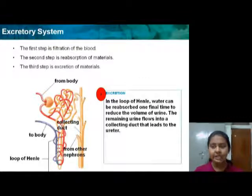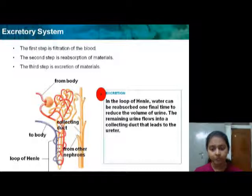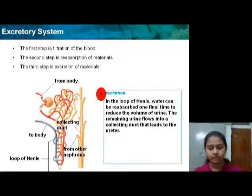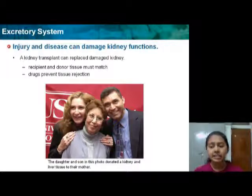In the Loop of Henle, water can be reabsorbed one final time to reduce the volume of urine. The remaining urine flows into a collecting duct that leads to the ureter.